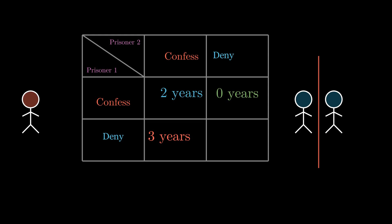If both of them deny the crime, they are just charged with minor arms possession and just given one year in jail. Now what would be the most rational thing to do in this particular scenario?